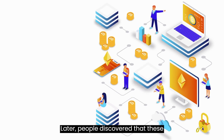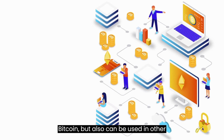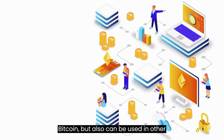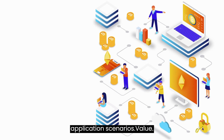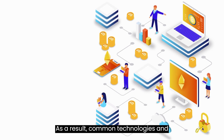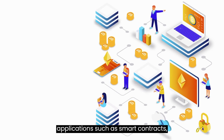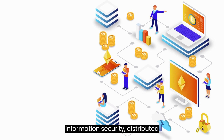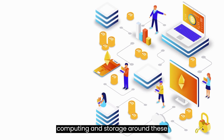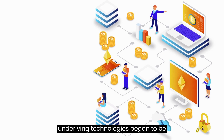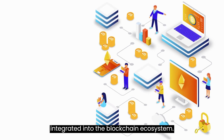Later, people discovered that these technologies are not only applicable to Bitcoin, but can also be used in other application scenarios. As a result, common technologies and applications such as smart contracts, information security, distributed computing, and storage around these underlying technologies began to be integrated into the blockchain ecosystem.